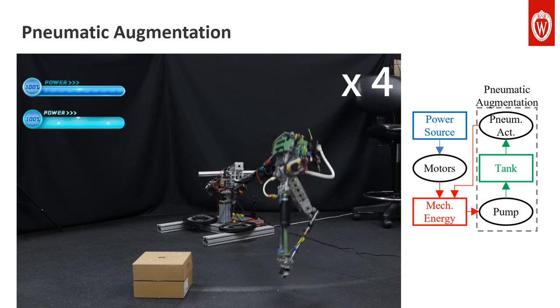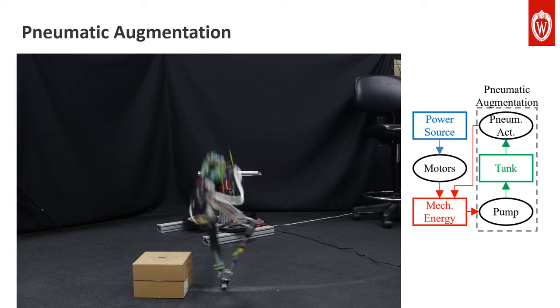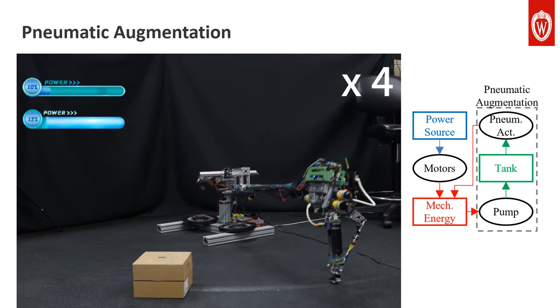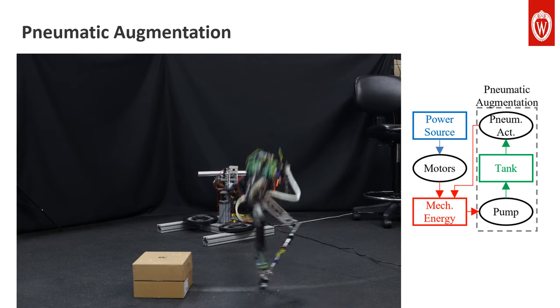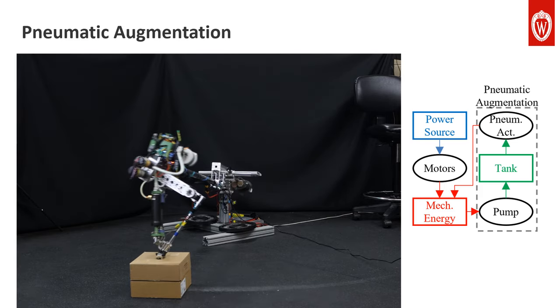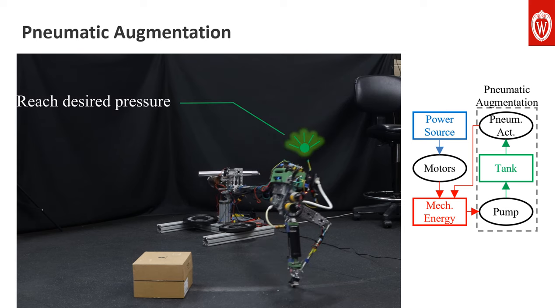During periodic hopping, the pump performs the negative work to the robot and stores the energy in the tank in the form of air pressure. The pressure stored in the tank thus increases over consecutive hopping cycles. Once the pressure in the tank reaches a certain value, the robot releases the air pressure to actuate the pneumatic actuator, giving it a surge of power output to complete explosive tasks.